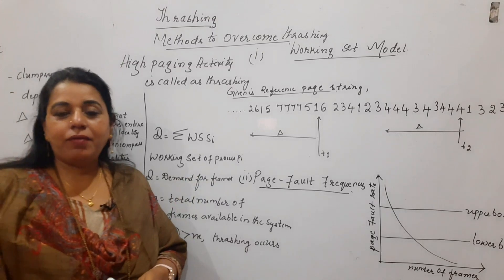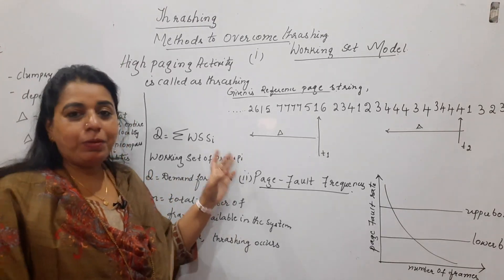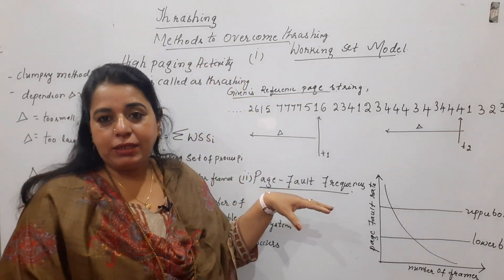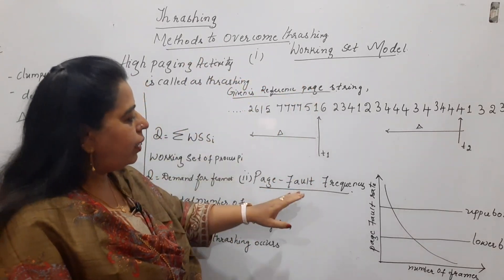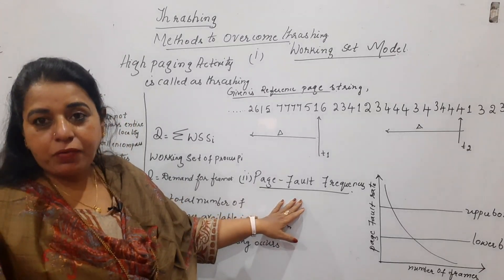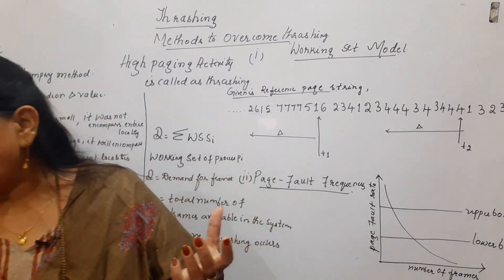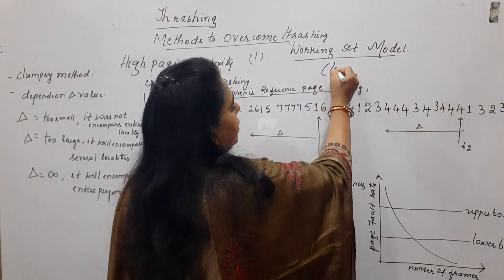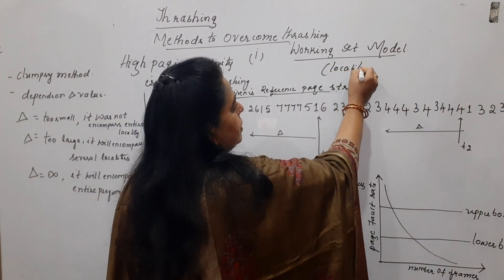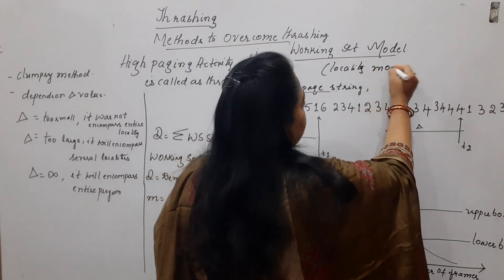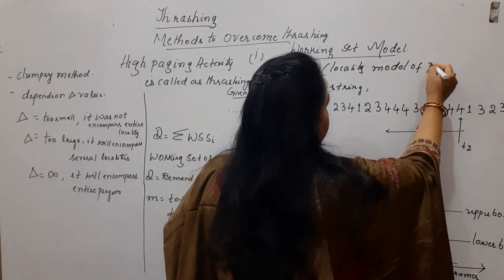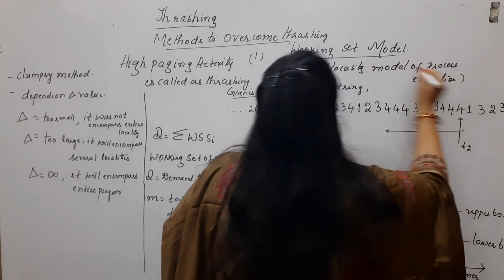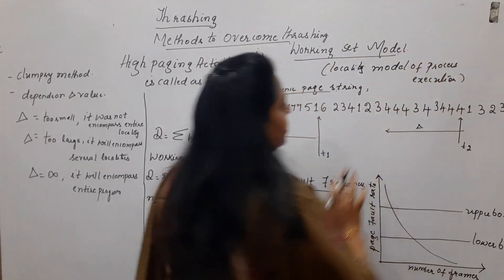Now, let us see which are the different methods to overcome the thrashing problem. There are actually two main solutions. One is called the working set model and the other one is called the page fault frequency. The working set model is also called the locality model of process execution — you can remember it by this term also.